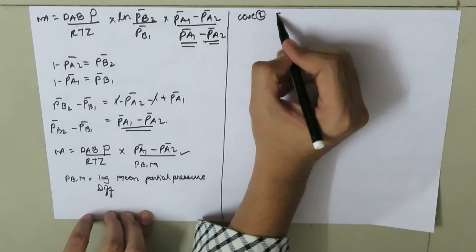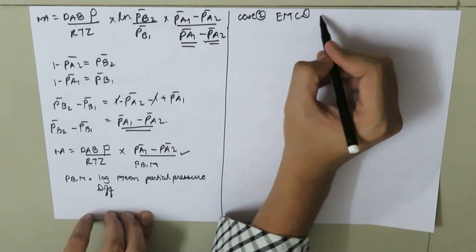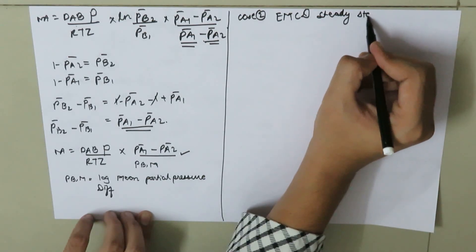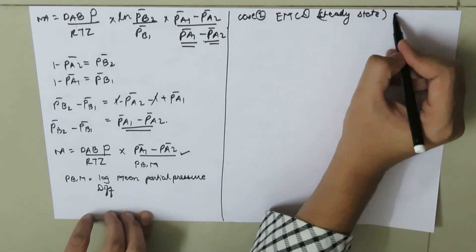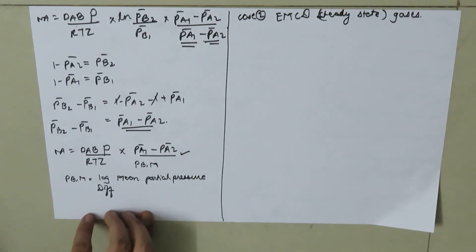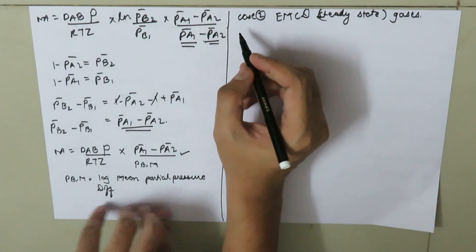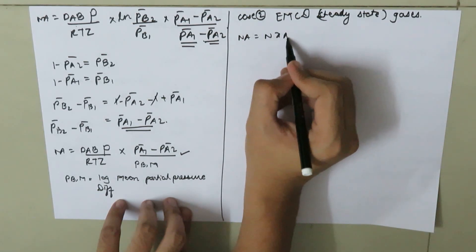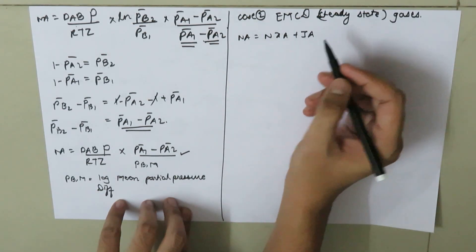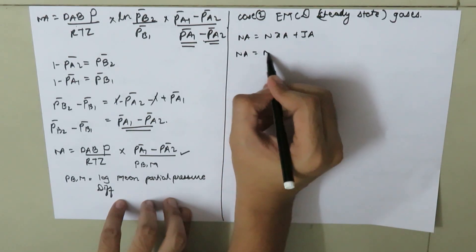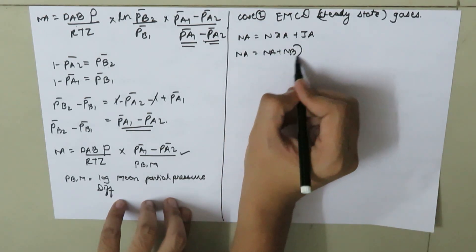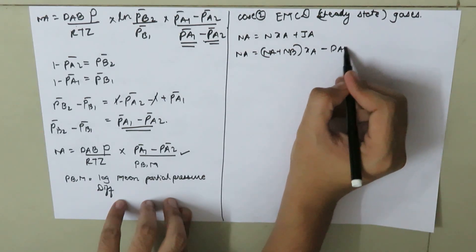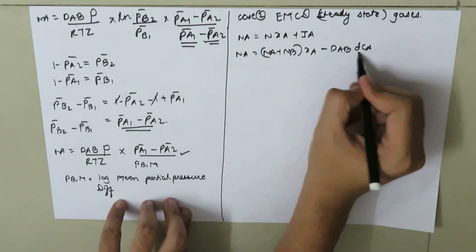The second case is equimolar counter diffusion at steady state for gases. The governing equation is: N_A equals (N_A plus N_B) times X_A minus D_AB times dC_A/dz.